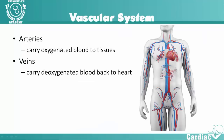Now let's talk about the vascular system. Our vascular system consists of arteries and veins, and then there are venules, arterioles, and capillaries. Basically, coming out of our heart are arteries, then we go to arterioles which are a little bit smaller, then we have the capillary network within different organs, and then venules and veins bring blood back to the heart.